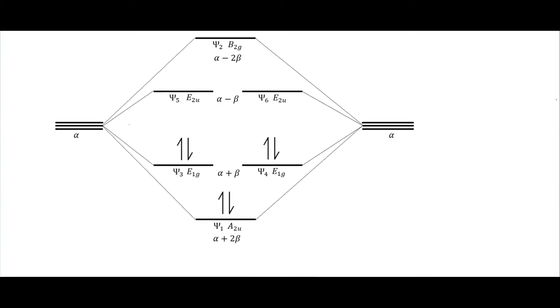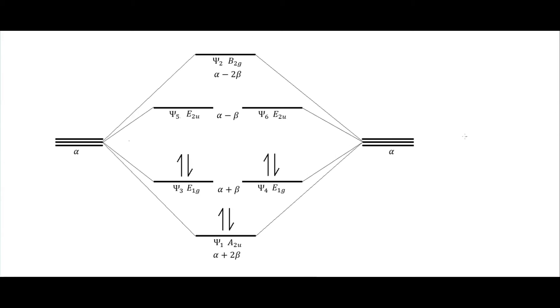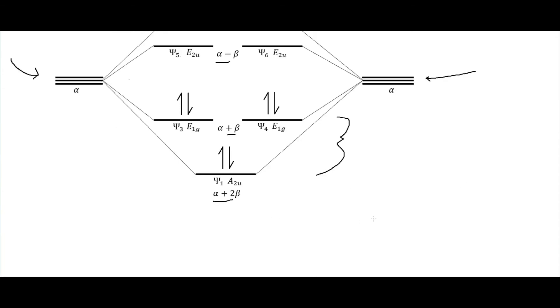This gives us our molecular orbital diagram. We have six atomic orbitals at energy α combining to form six molecular orbitals: α + 2β and α + β as bonding, then α − β and α − 2β as antibonding. Each carbon contributes one electron for six total electrons, filling the three bonding molecular orbitals.